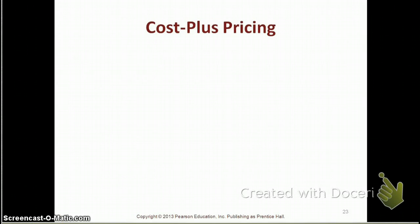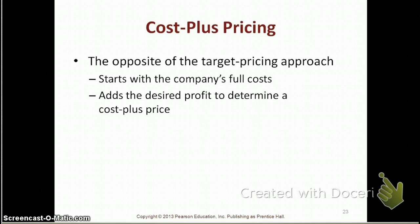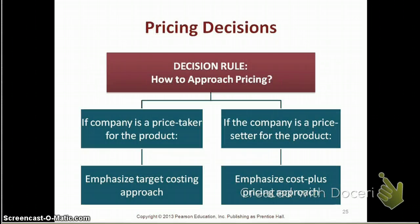The second pricing approach is cost plus pricing. Remember, cost plus pricing is used by price setters. In cost plus pricing, we start with the company's full cost — it is the opposite approach to target costing. You start with full cost, add the desired profit, and that gives you the cost plus price. The decision rule: if a company is a price taker, emphasize target costing; if the company is a price setter, emphasize cost plus pricing.